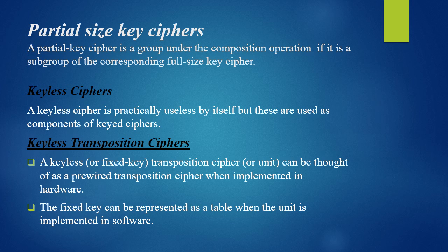A keyless or fixed-key transposition cipher can be thought of as a pre-wired transposition cipher when implemented in hardware, and it can be represented as a table when implemented in software. Whenever we want to encrypt a plaintext block, we look up the table to see which character maps to which, and we get our ciphertext block. In the case of modern ciphers, we look up which bit is permuted to which position to get the output.